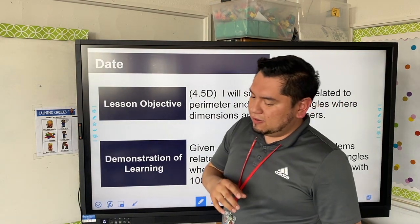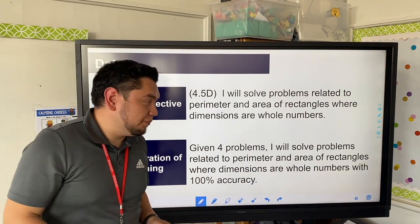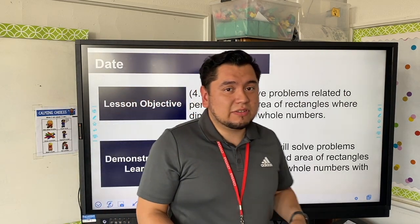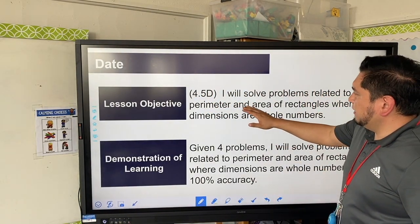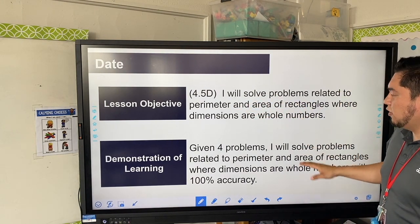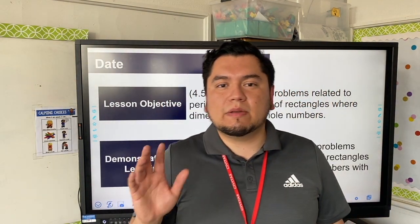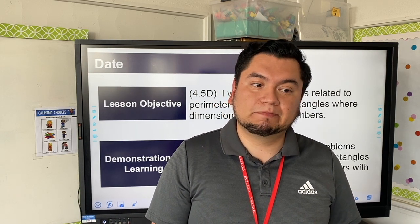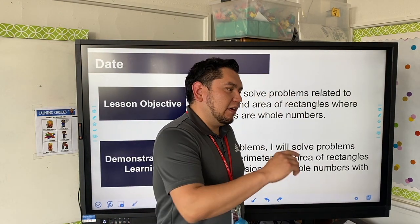Today we're going to be solving problems related to perimeter and area, particularly of rectangles. We've done this in the past — this is our review because we've got to keep practicing. You're going to be solving problems related to perimeter and area of rectangles where dimensions are whole numbers. Yesterday you worked on decimal numbers, but not today — today we are going to be mostly seeing whole numbers.